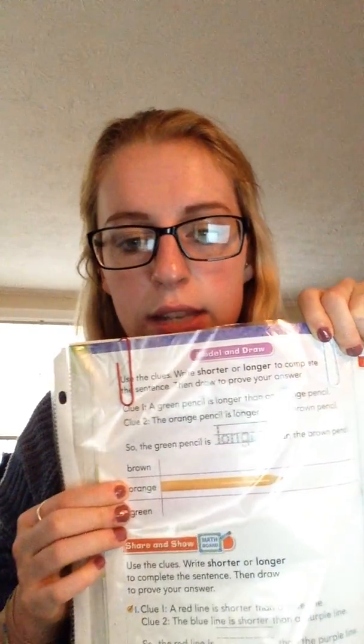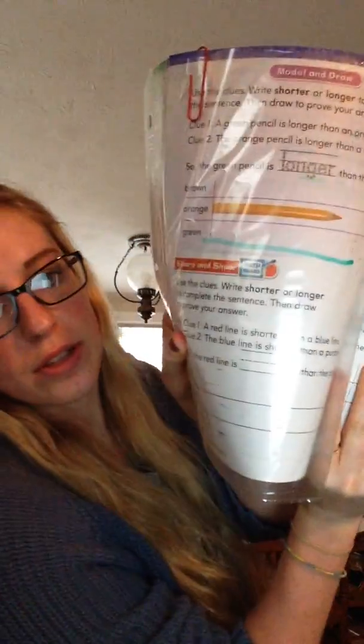Let's turn the page — we're now on page 520. It says use clues, write shorter or longer to complete the sentence, then draw to prove your answer. Our first clue says a green pencil is longer than an orange pencil. We can use that hint and go ahead and draw. The page shows us how long the orange pencil is, and since the green pencil is longer than the orange, when we draw our green pencil, we're going to draw it longer than the orange one. The green pencil is longer than the orange pencil.